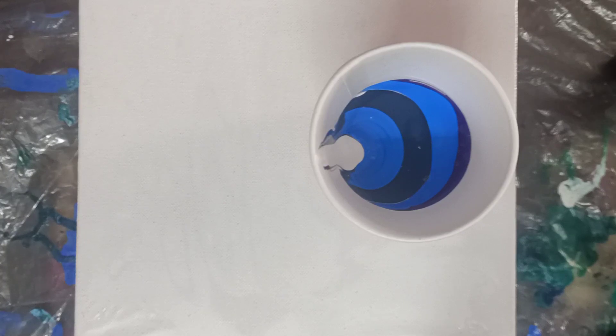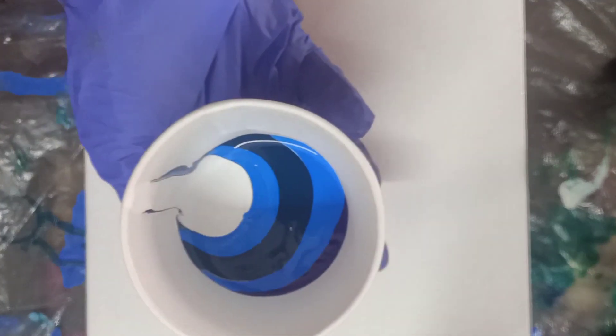As you can see, now I have like a quarter of my cup filled with the color, so now we are going to pour the color on the canvas. I have a canvas of 8 by 8 inches today with me, and now we are going to do the flip technique. We'll put the canvas on the glass, like this, and then we'll flip.